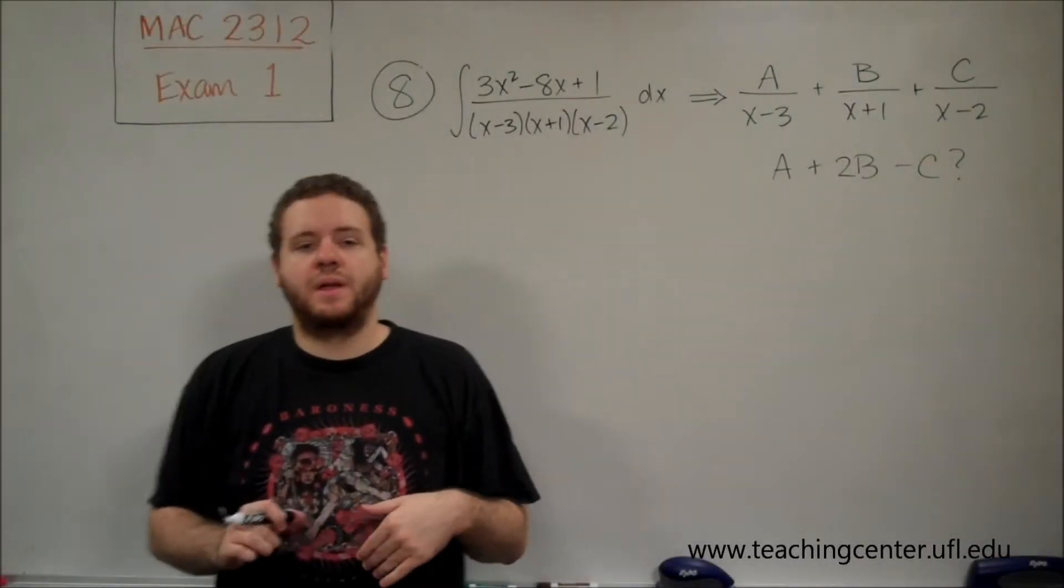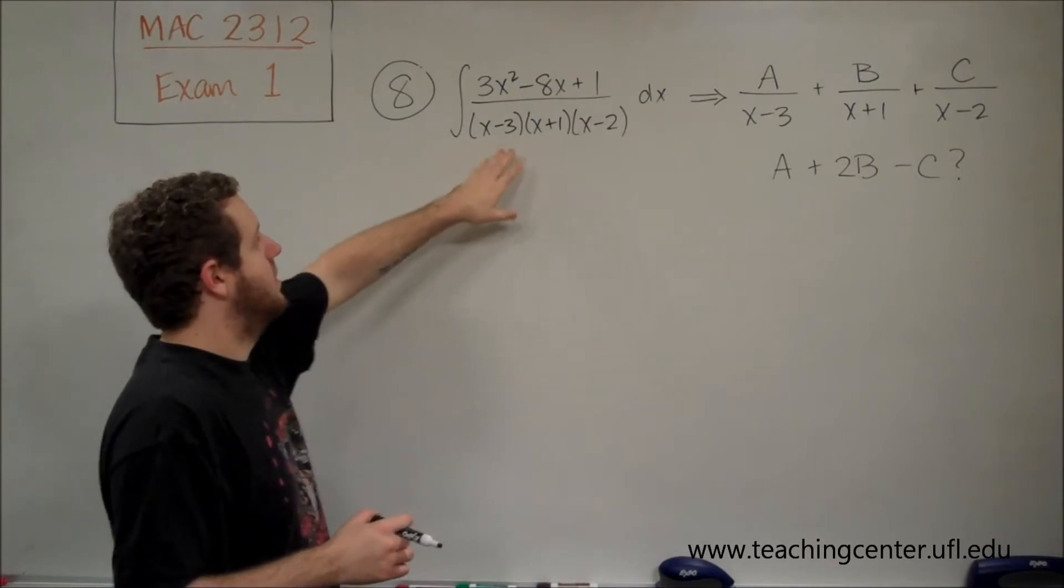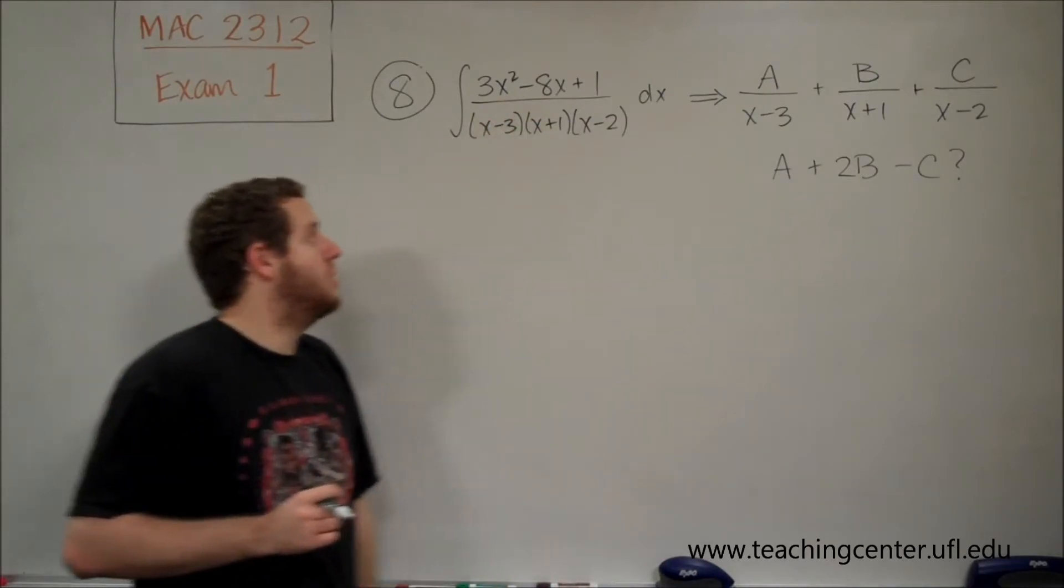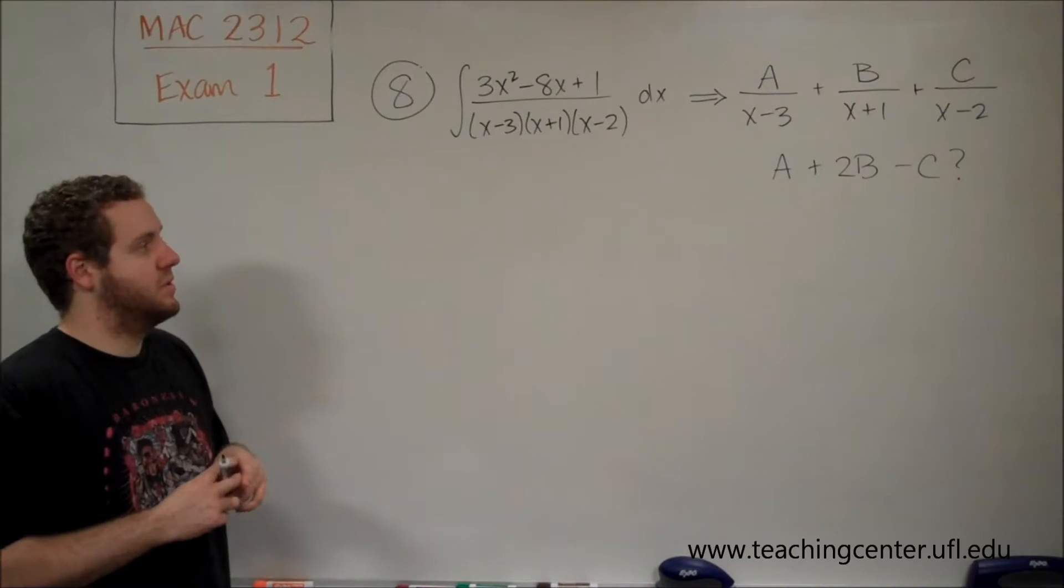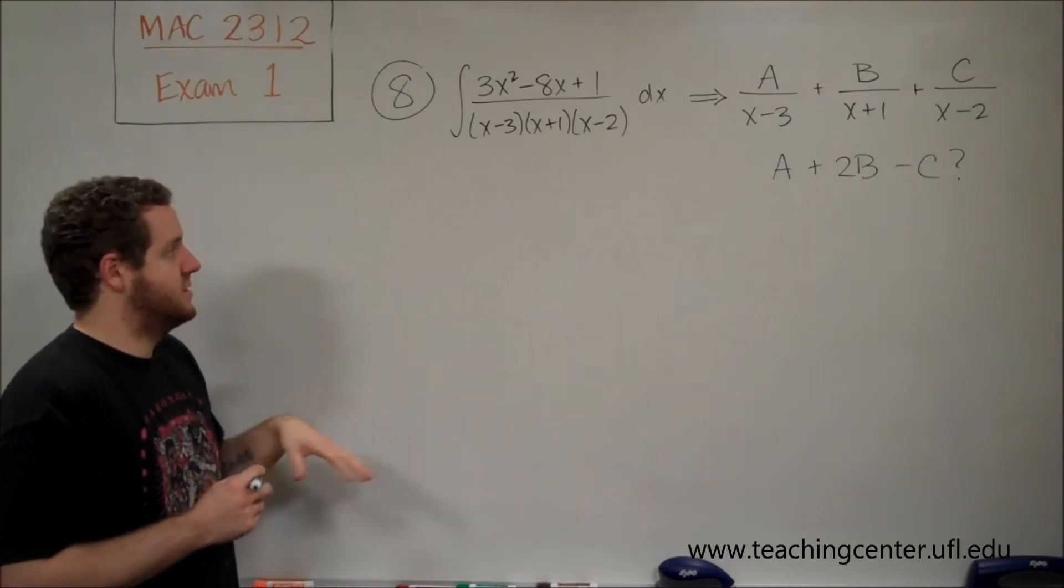Okay, for number 8 we have an integral of a rational function. We have a top polynomial of degree 2, bottom polynomial of degree 3, and we're going to split it up into partial fractions.